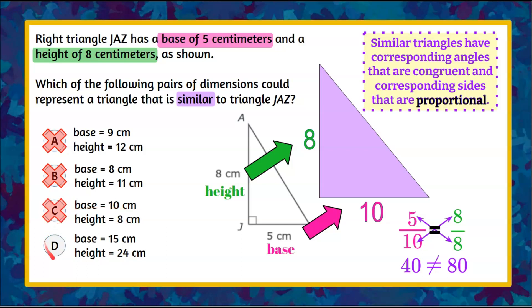All right let's hope it's answer choice D but let's check our work first. Clear our workspace. Base is going to go from 5 to 15 centimeters. Our height is going to go from 8 to 24 centimeters. And here is our proportion. First ratio 5 to 15, is that equal to our second ratio 8 to 24.